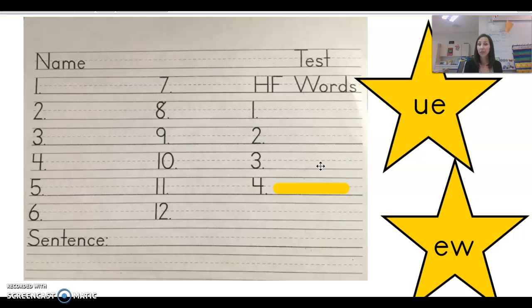The high-frequency words again. Number one is family. Number two, very. Number three, told. And number four, where.